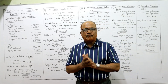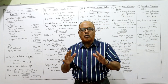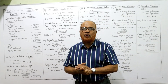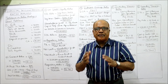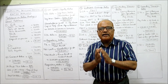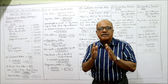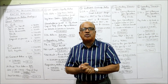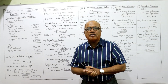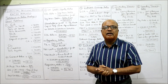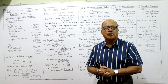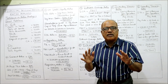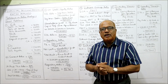So my suggestion is: be thorough, be perfect on all 4 categories of ratios — liquidity ratio, capital structure ratio, activity or turnover ratio, and profitability ratios. Be perfect on all the ratios, then come to this video.